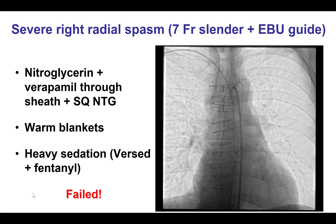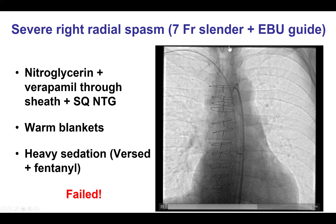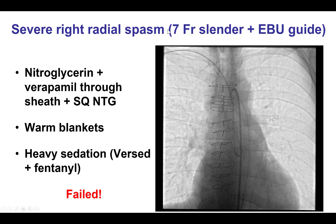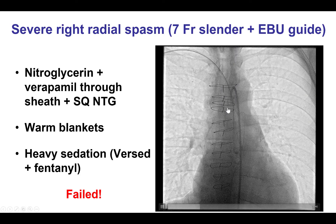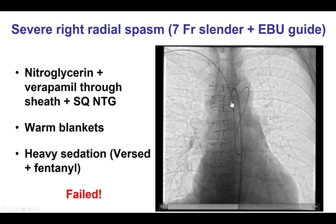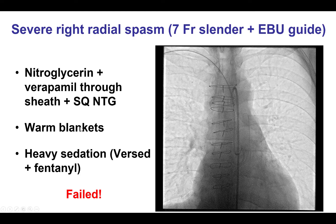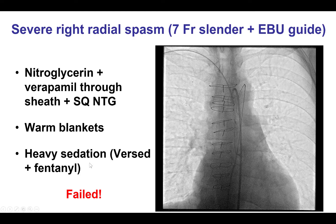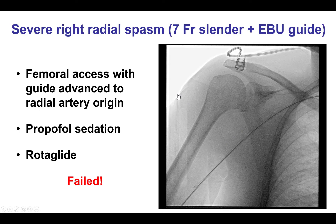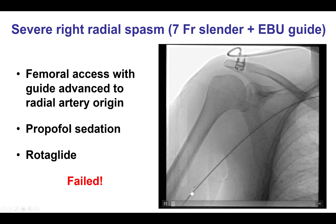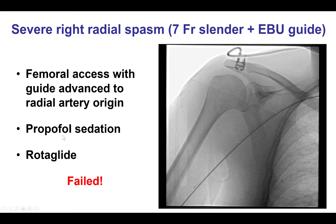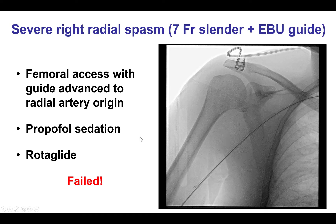We decided to use a femoral-radial axis. However, after reaching the ascending aorta with a 7-French EBU guide that was advanced through a right radial 7-French slender sheath, significant spasm occurred that prevented us from either advancing or withdrawing the guide catheter. We initially gave nitroglycerin through the sheath as well as sublingual nitroglycerin. We placed warm blankets on the arm and gave heavy sedation with Versed and fentanyl. However, the spasm was so strong we could not move the catheter at all. We then obtained left femoral access and advanced a catheter all the way close to the origin of the radial artery and gave locally nitroglycerin and verapamil, also without success. We called anesthesia and gave propofol for sedation, also without success, and we even gave rotaglide through a multipurpose catheter, but were still unable to move the entrapped guide catheter.